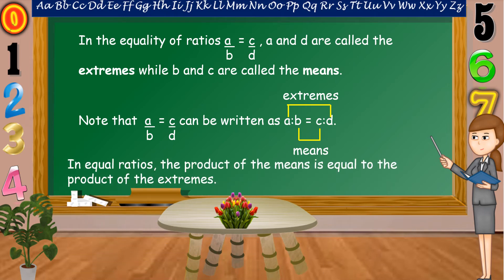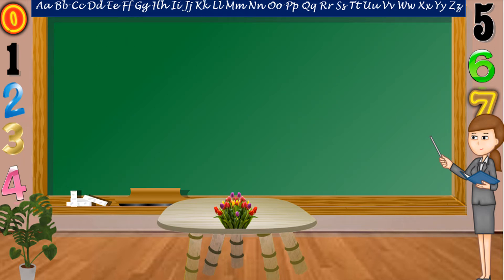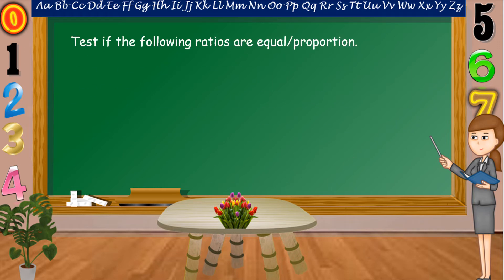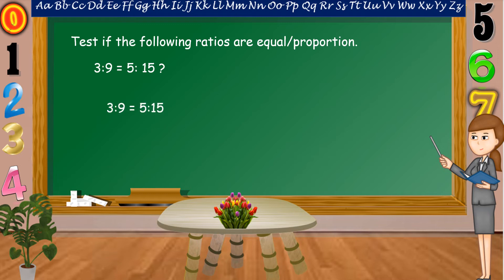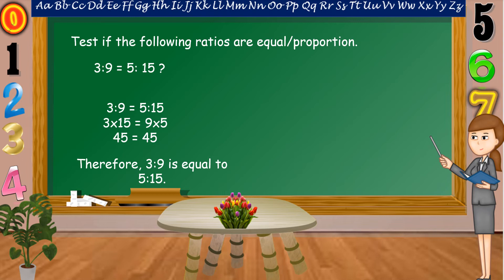In equal ratios, the product of the means is equal to the product of the extremes — this is called a proportion. For example: is 3 is to 9 equal to 5 is to 15? To find the answer, we multiply the extremes and the means. Three times fifteen is equal to forty-five, and nine times five is equal to forty-five. Therefore, 3 is to 9 is equal to 5 is to 15. They are equivalent ratios.